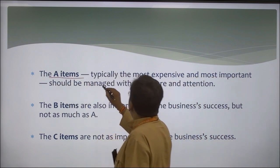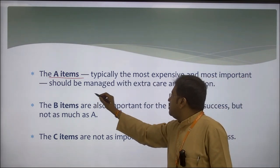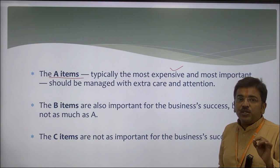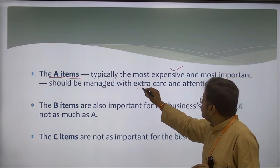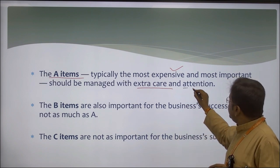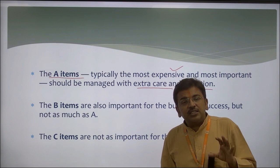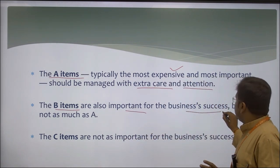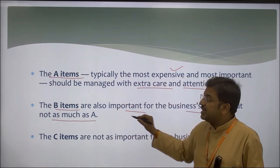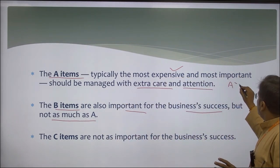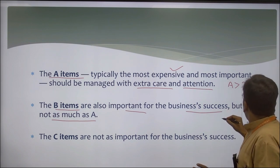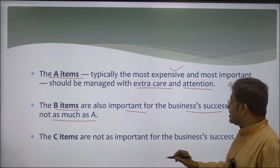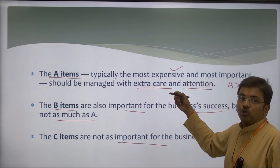A items are typically the most expensive and most important and should be managed with extra care and attention. Extra care must be taken and extra attention paid so that there is a reduction in wastage. B items are important for business success but not as much as A items — A has greater priority than B. C items are not as important as either of the previous two categories.